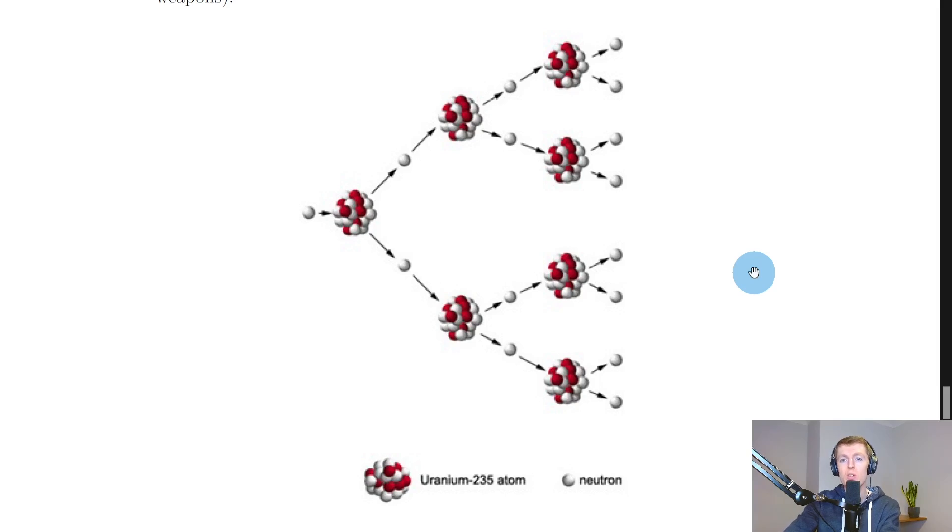So we can use something called a moderator to absorb neutrons and stop some of them from going on to cause fission reactions, and that keeps a kind of safe limit on how much energy is going to be produced.